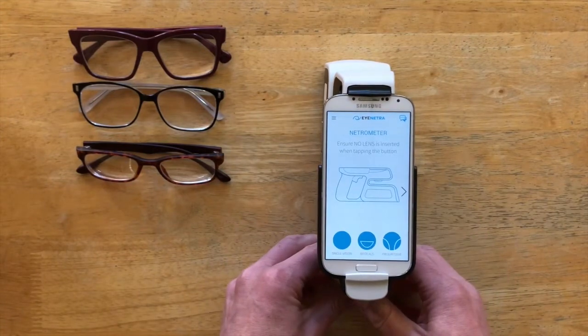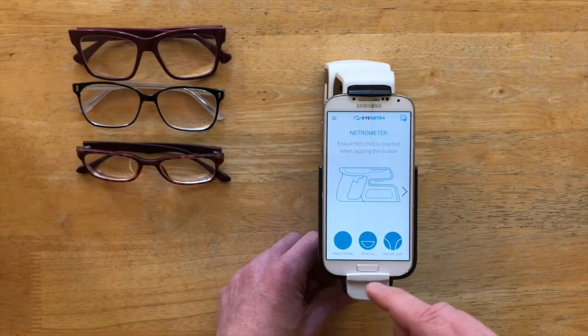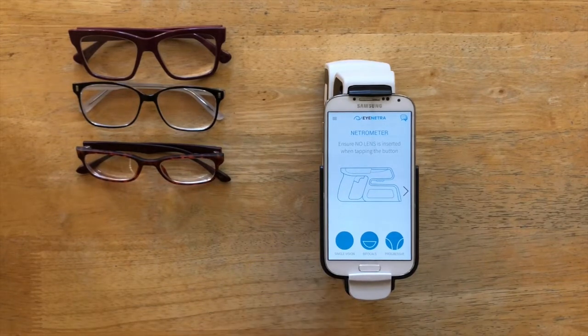Now you'll notice we have three modes here, one for single vision, one for bifocals, and one for progressive glasses. So let's begin with single vision.